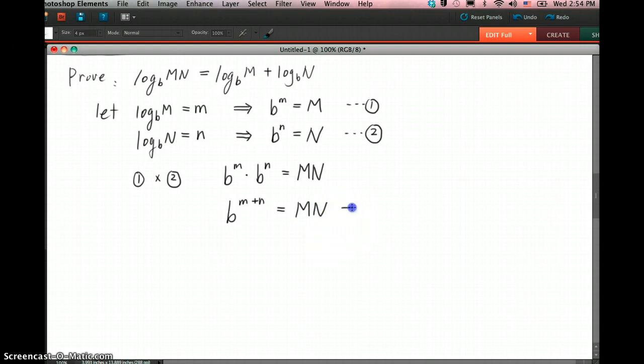Okay, so then we just turn this into log form. So you can tell this is exponential form. If you turn it into log form, you would get log base b of MN at the power. And then here you go, you get m plus n.